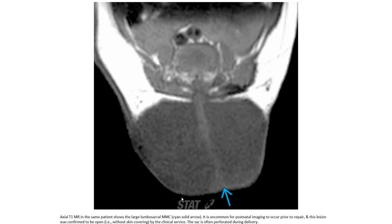This is a T2 image in the same patient showing the large lumbar sacral myelomeningocele. It is uncommon for postnatal imaging to occur prior to repair, and this lesion was confirmed to be open by the clinical service. The sac is often ruptured during delivery.